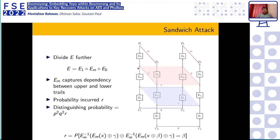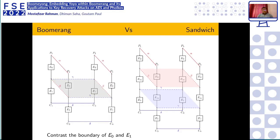In the sandwich attack, in addition to E0 and E1 there is a middle part EM sandwiched between them. EM captures the dependency between the upper trail and the lower trail, and an additional probability r is incurred for that EM part. The overall probability of the framework is p²q²r. The left side shows the Boomerang attack framework — only E0 and E1 — while the right side shows the sandwich attack with EM sandwiched in between.